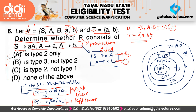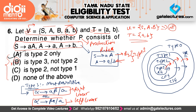Both productions satisfy the condition of Type 3 grammar, so I can say this grammar is Type 3. And since every Type 3 grammar is also Type 2, every Type 2 is also Type 1, and every Type 1 is also Type 0, let us now read the options one by one.